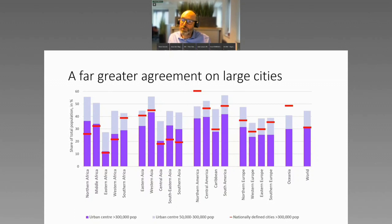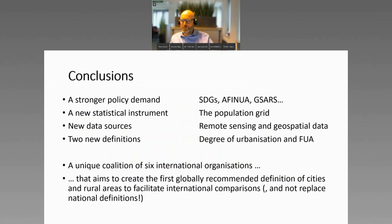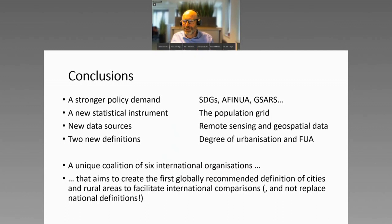That's why it was useful to create something continuous, harmonized, and easily defined everywhere. What I really want to stress is that remote sensing has made all this possible. Without remote sensing, we wouldn't have a population grid and we wouldn't have a global definition. We were able to go to countries across the world and show them our estimates of what their degree of urbanization would look like.